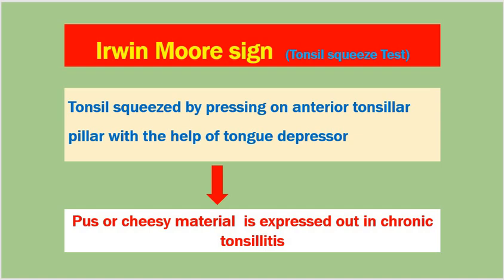If you squeeze the tonsils by pressing on the anterior pillar with the help of a tongue depressor, then pus or caseous material is expressed out in chronic tonsillitis. That means if pus or caseous material comes out from the tonsils, it is considered to indicate chronic infection. This is called Irwin's sign or the Tonsil Squeeze Test.